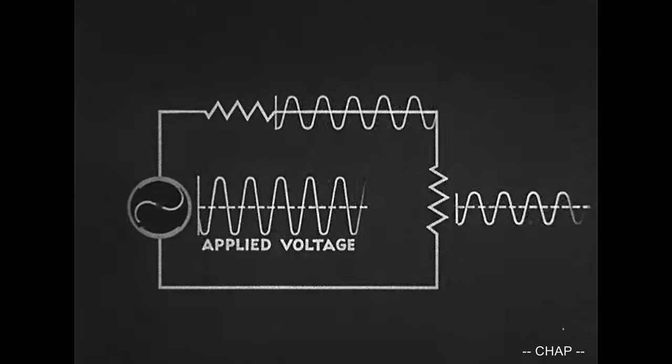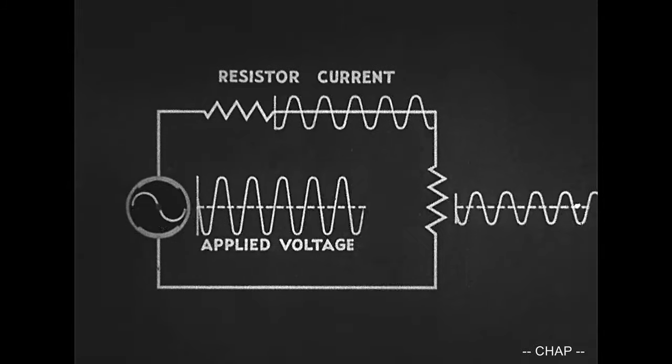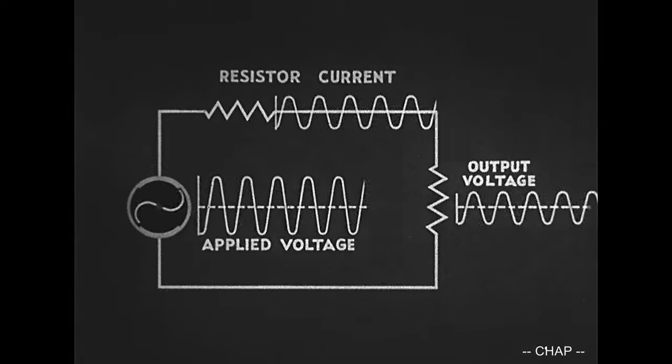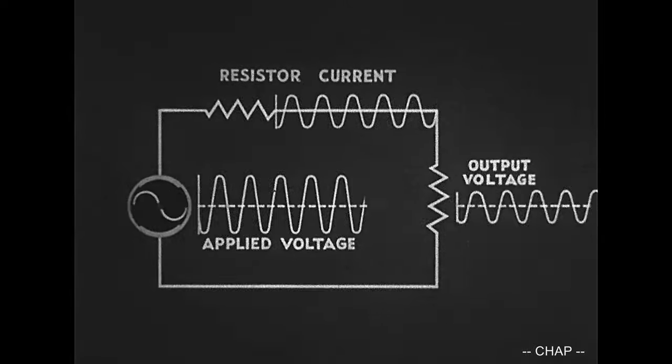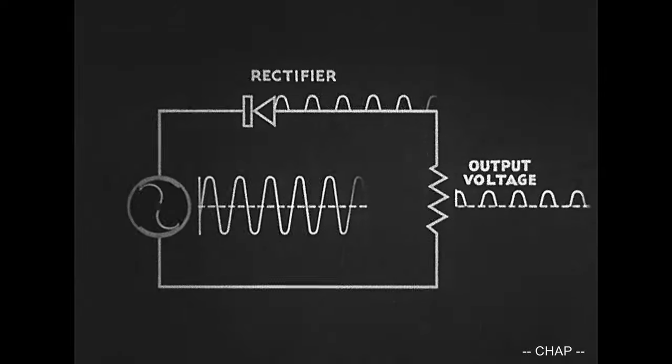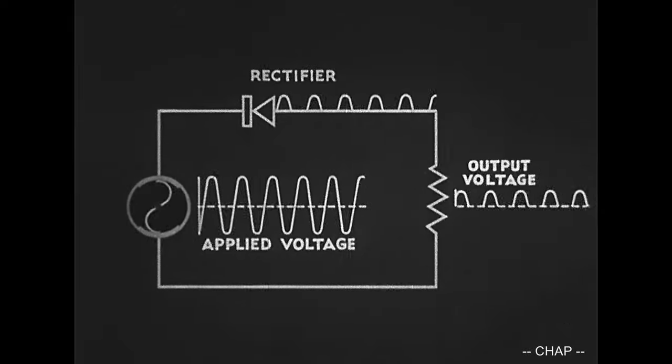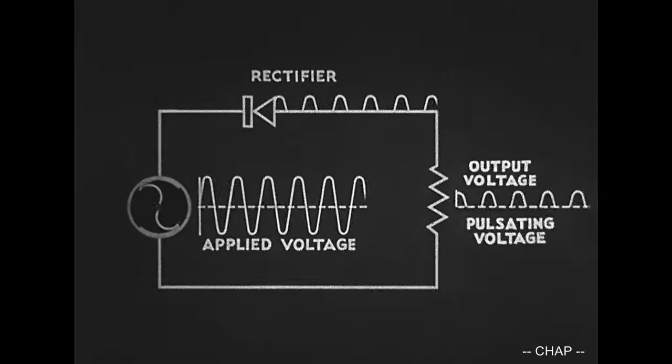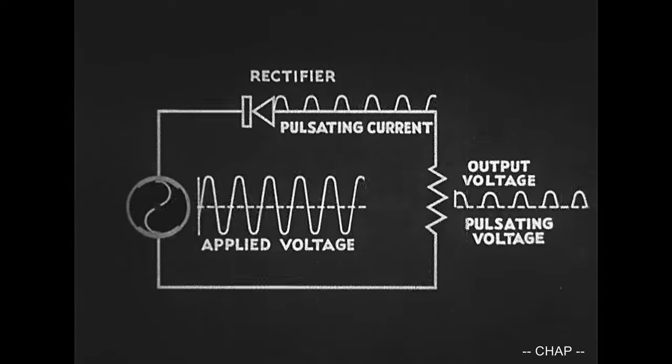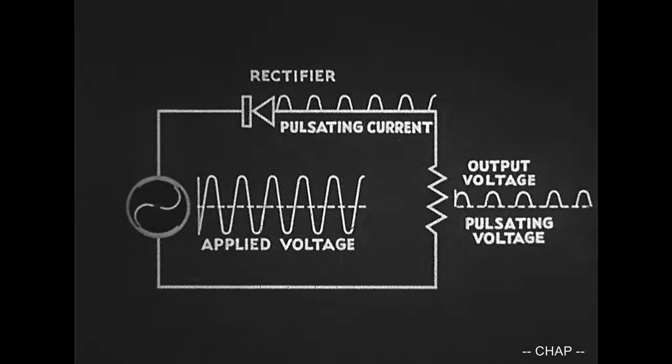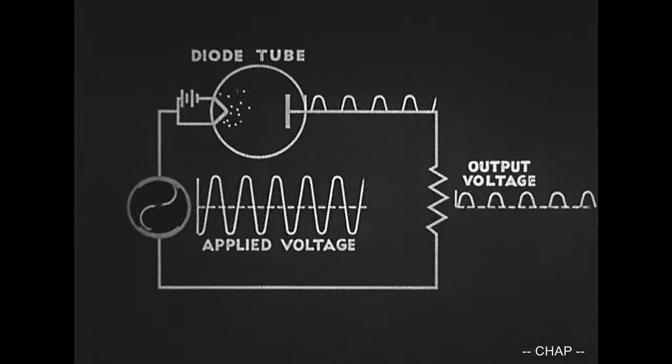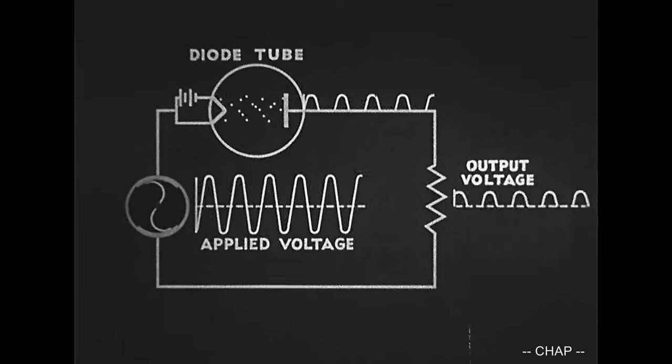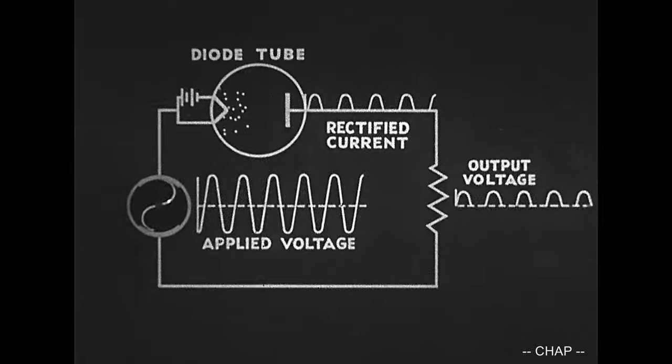When an alternating voltage is applied in the circuit having one or more resistances, the current through the resistance is alternating. The output voltage is also alternating. If a crystal rectifier is substituted for the resistance, only half of each wave can pass. The output current and voltage are pulsating. The diode tube is a rectifier. In the circuit, it results in waves of pulsating current and voltage. The electrons pass to the plate only during the positive half of the wave.